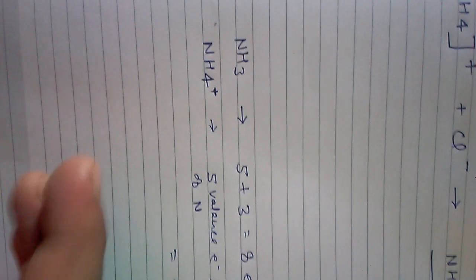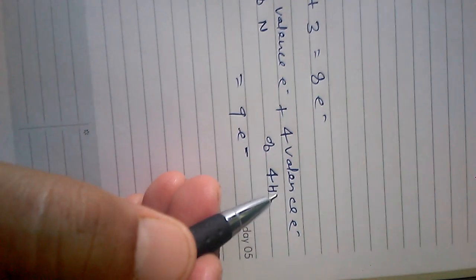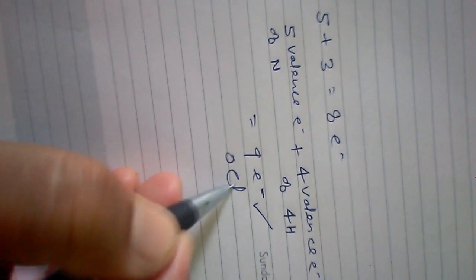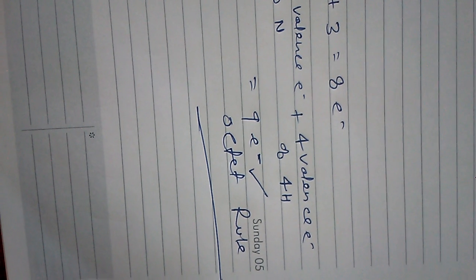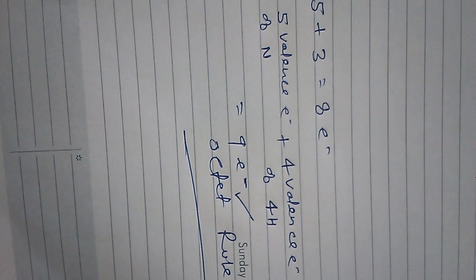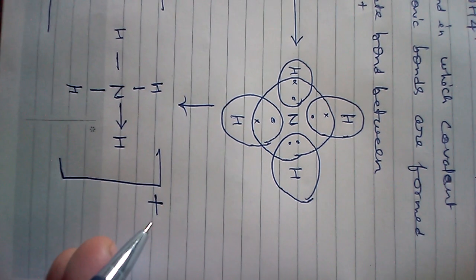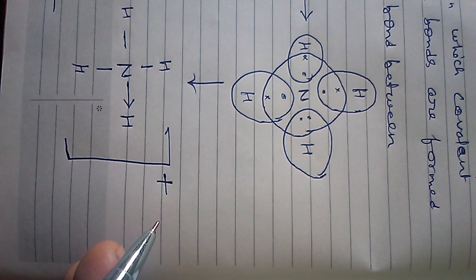In the case of NH₄⁺, one more hydrogen is added — so now five valence electrons of nitrogen plus four valence electrons of four hydrogens gives a total of nine electrons. This is beyond the octet rule, which states the maximum number of electrons in the outermost shell of any atom is eight. To maintain eight electrons on nitrogen, the ammonium ion carries one positive charge, meaning one electron is effectively lost by nitrogen.